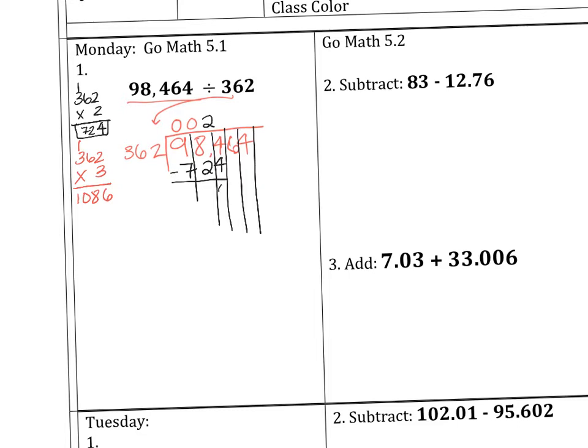Now you're going to subtract that. 4 minus 4 is 0. 8 minus 2 is 6. 9 minus 7 is 2. So now we have 260, but 362 doesn't fit into that. So now we're going to bring this 6 down. How many times does 362 fit into 2,606?